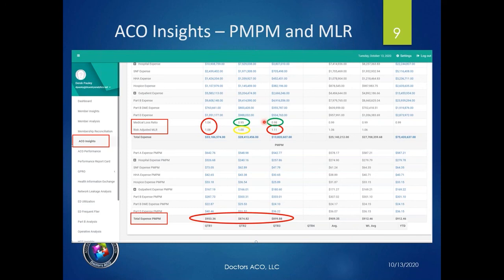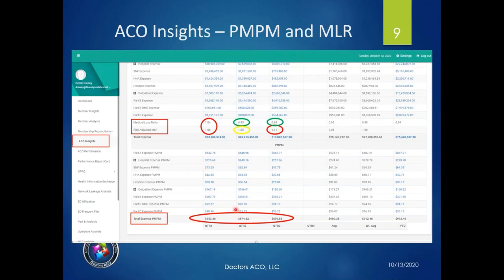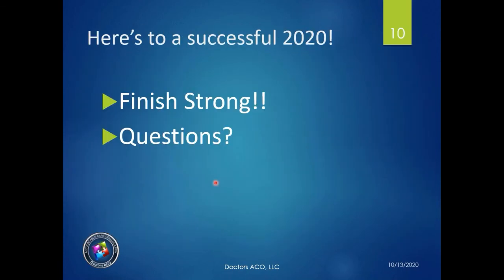At the bottom of the ACO insights report you have total expense PMPM for Q1, Q2, Q3, plus a weighted average and year-to-date. The weighted average weights the number of beneficiaries assigned each quarter. This tells you exactly where you are in the ACO. Blue Sky also breaks it down by hospital, nursing home, and home health, so you can see where your patient expenses are incurring. Here's to a successful 2020 finish — now I'll open it up for questions.